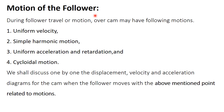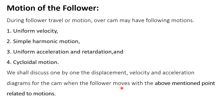Different types of motions related to followers during follower travel or motion over a cam may have the following motions: first is uniform velocity, second is simple harmonic motion, third is uniform acceleration and retardation, and fourth is cycloidal motion. We shall discuss each one by one.